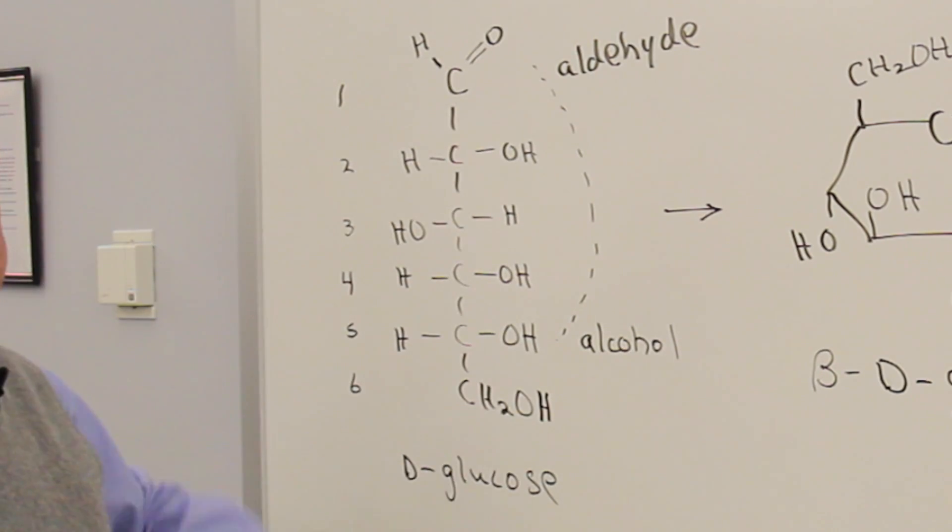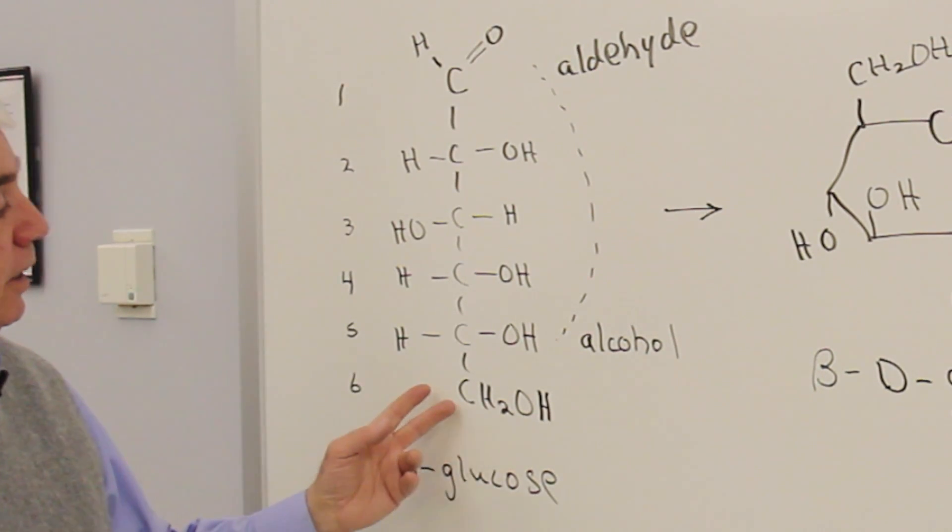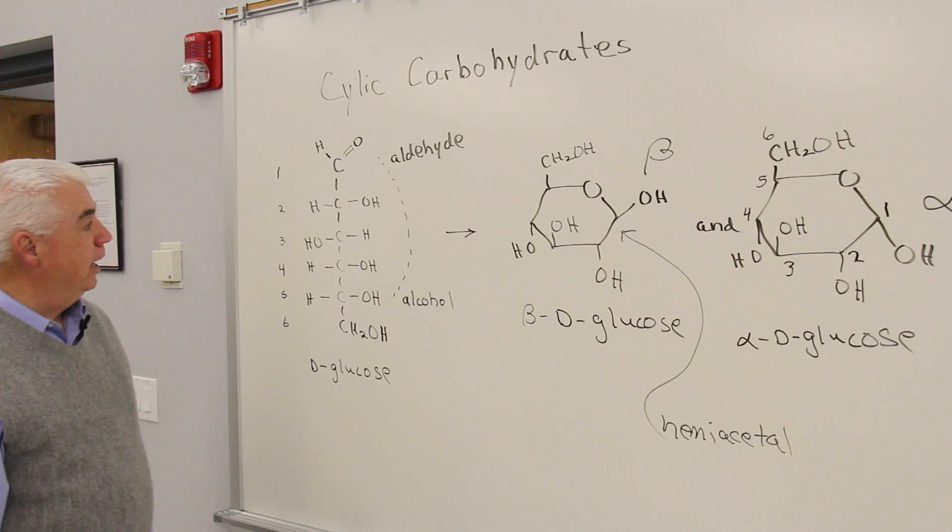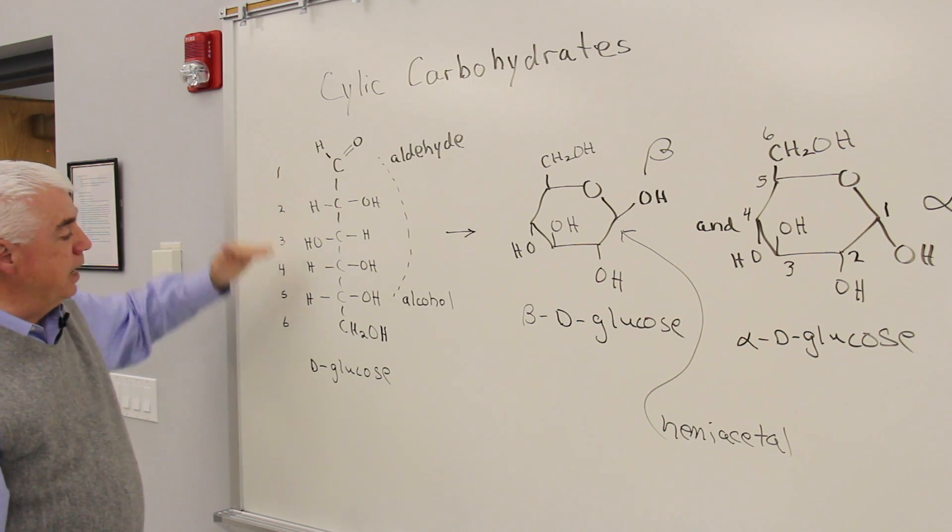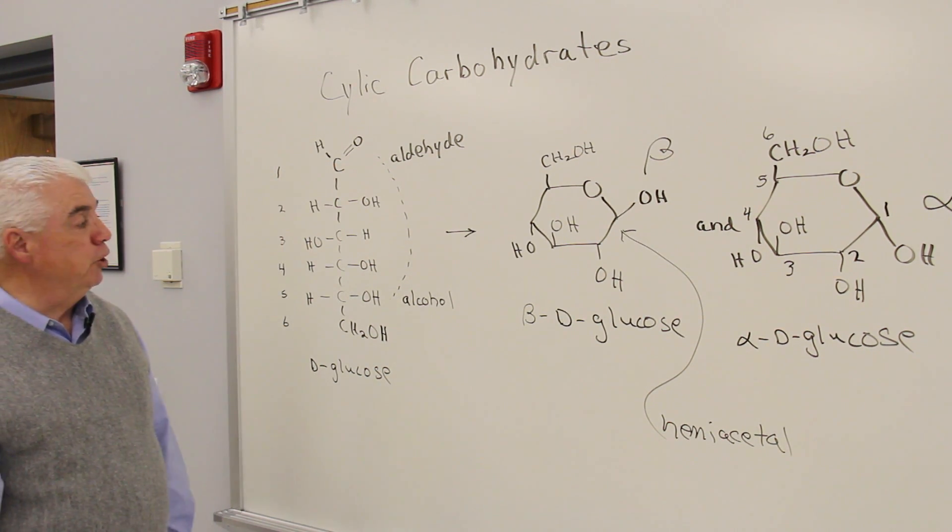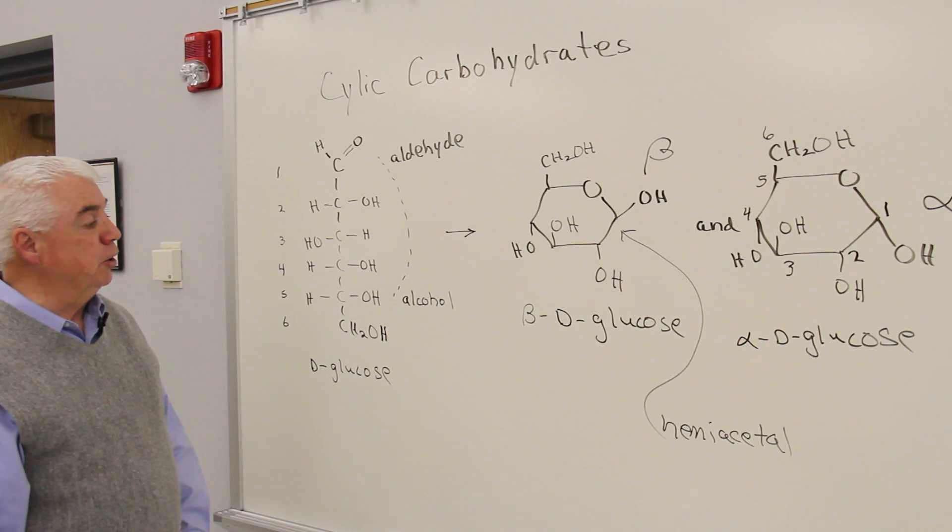Here's the open chain structure of glucose, we call it. This is a typical carbohydrate. There are six carbons here. It's got an aldehyde at the top, so it would be an aldose. Six carbons would be a hexose. This is an aldohexose. And we've numbered those carbons from the top to the bottom, starting with the end where the C double bond O is located, or as near as we can to where the C double bond O is located.